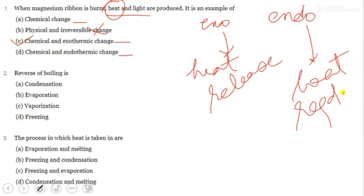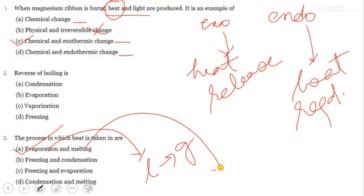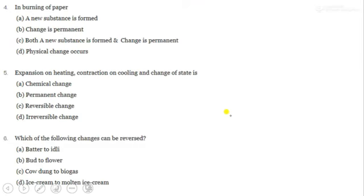Melting means solid going to liquid — heat is required for that too. Freezing is not the answer because in freezing we lower the temperature to convert liquid to solid, so heat is not absorbed. Condensation is also the wrong option. The correct answer is evaporation and melting, as both require heat input.